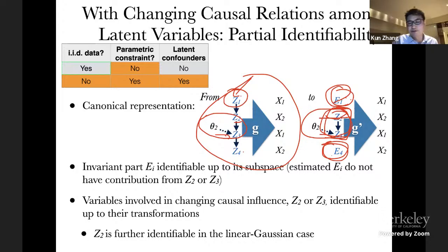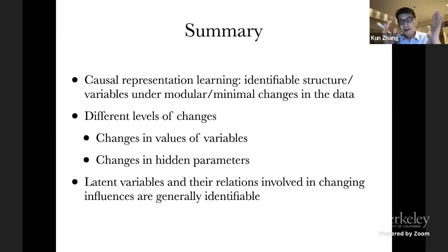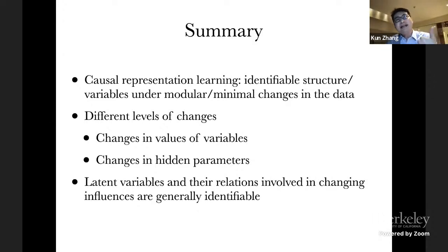To summarize, this talk is about causal representation learning. We want to see: first, what properties of the causal system can we make use of to recover the underlying causal representation; and second, how can we establish identifiability results to make sure what we recover from data is consistent with the ground truth.